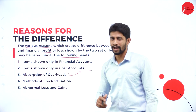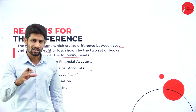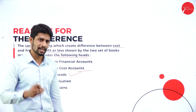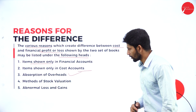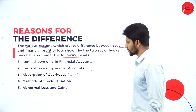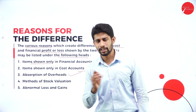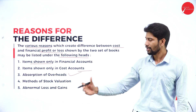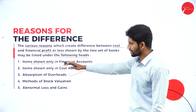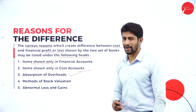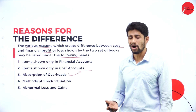The third reason is absorption of overhead — overhead meaning expenses. Sometimes we are not going to show the overhead in both sides, that is in financial accounts as well as in cost accounting, and because of this reason also, you may see the difference in profit in both accounts. The fourth reason is methods of stock valuation — the method of stock valuation is different in financial accounts versus cost accounts, and because of that, the books show a difference in profit.